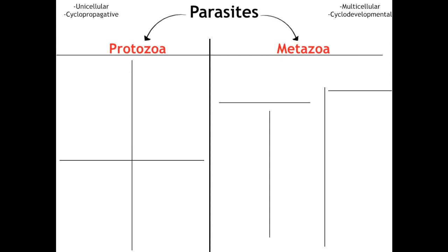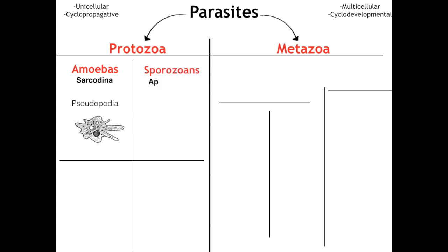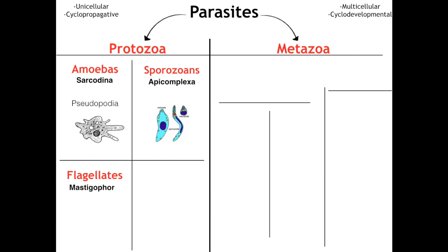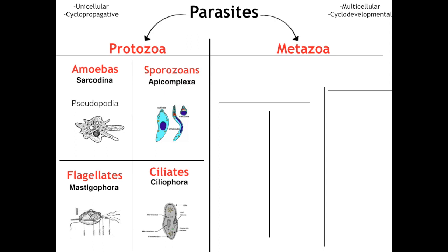Our protozoans are broken up into four phyla, categorized by their method of motility. First up we have the amoebas, formerly named sarcodina, who move by means of their pseudopodia. Next we have our sporozones, formerly called apicomplexa, who have no true method of motility — they're gravity dependent, sometimes referred to as gliding motility. Next up are our flagellates, formerly called mastigophora, who move by means of their flagellum. And finally we have our ciliates, or ciliophora, who move via their cilia.